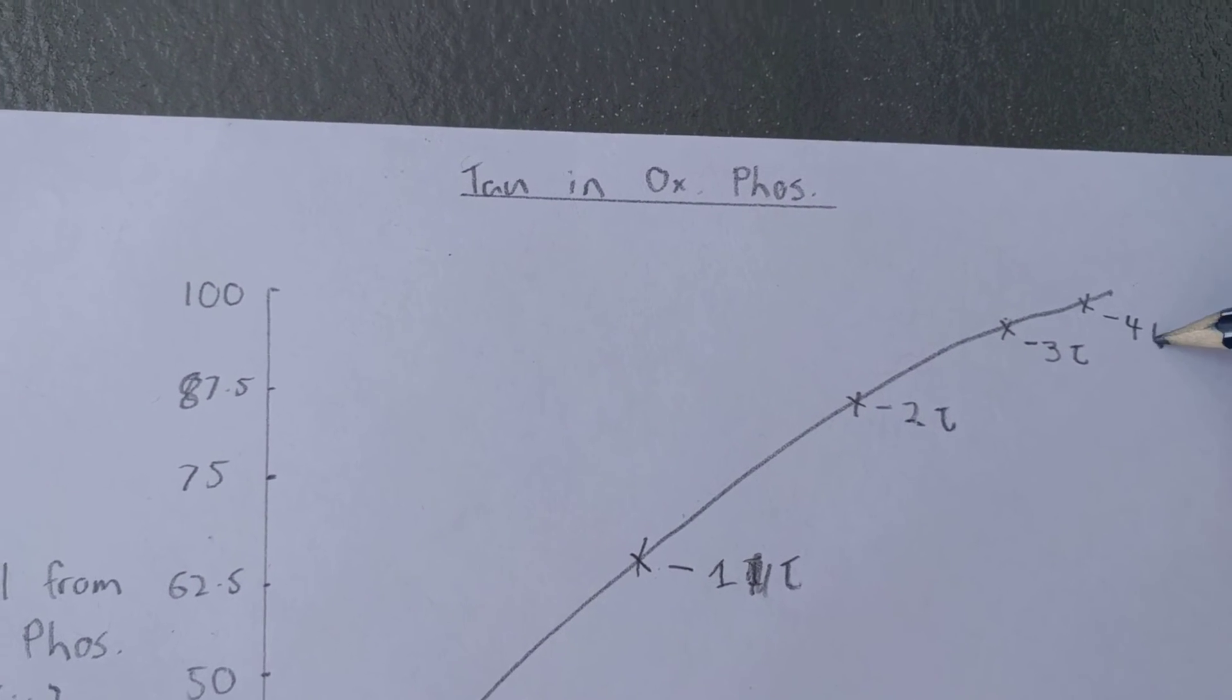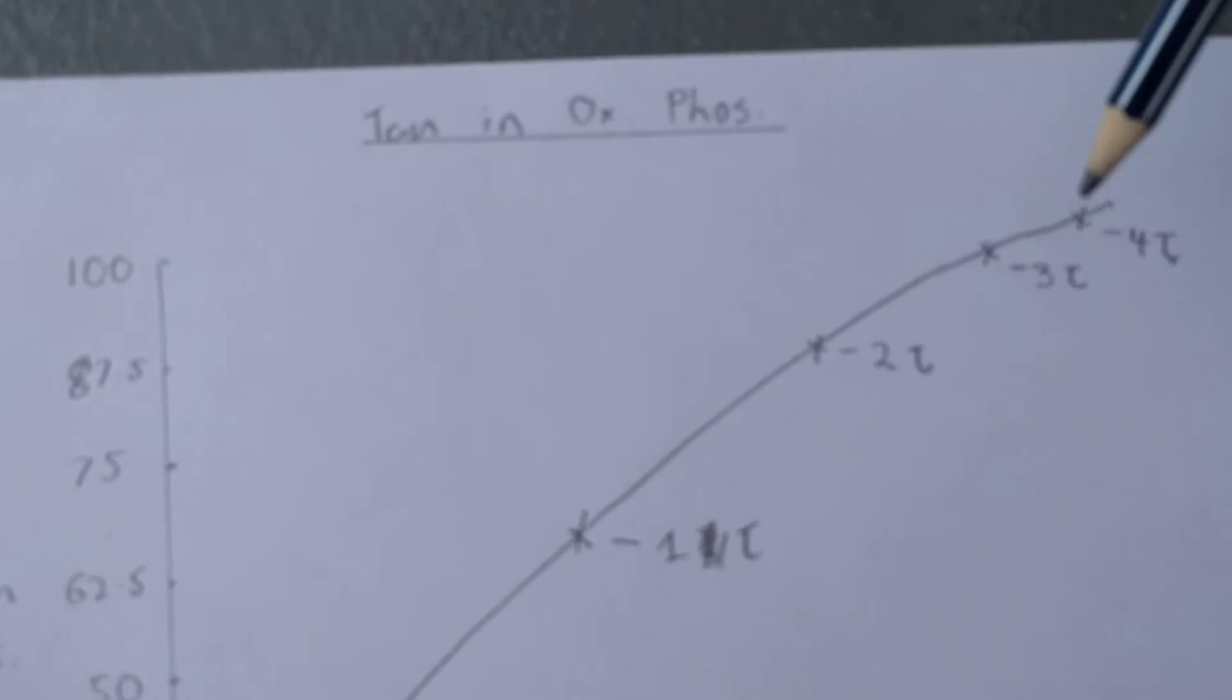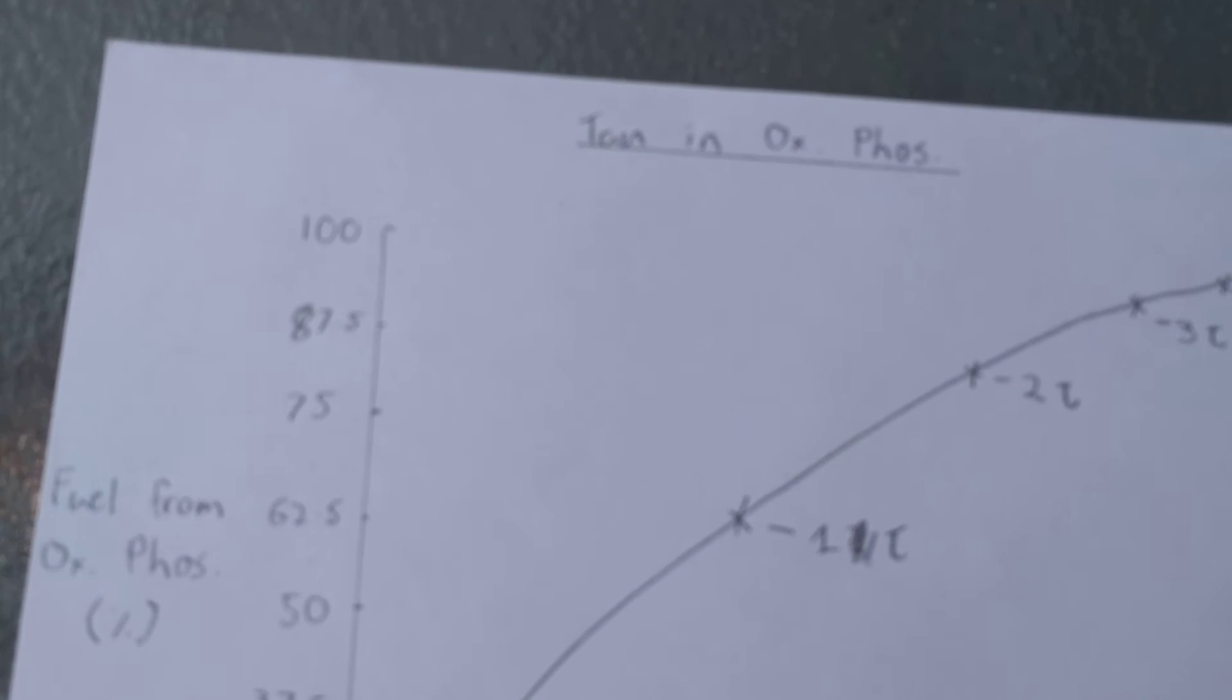And on a more accurate graph, that would be pretty much right on the line between 100 and there, so that's 4 tau there.